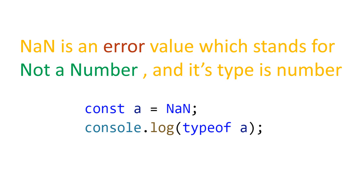In JavaScript, NaN is an error value which stands for 'Not a Number'. The type of NaN is number. NaN is an error value, however it is also a property on the global object.